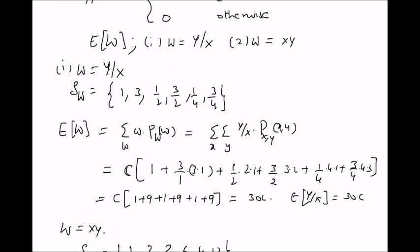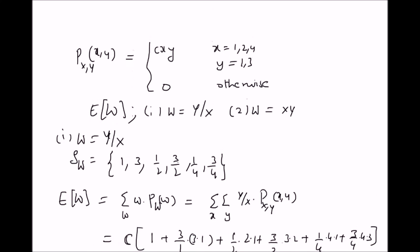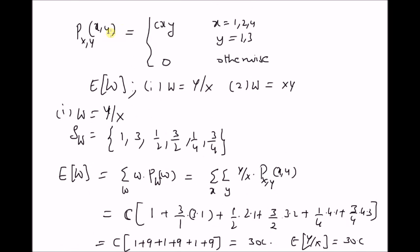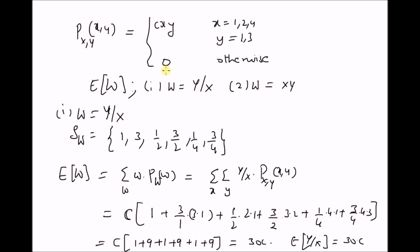Hence, given a joint probability mass function P(x, y), it is possible to calculate the expected values of the new random variables y/x and x·y — that is, the expectations of the ratio and the product of the two random variables.